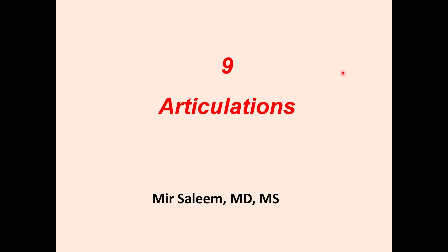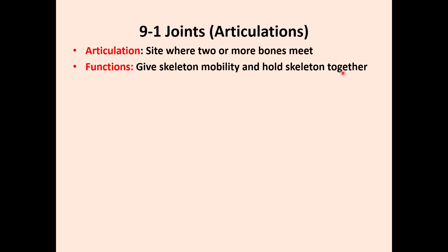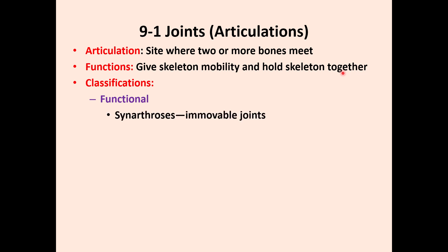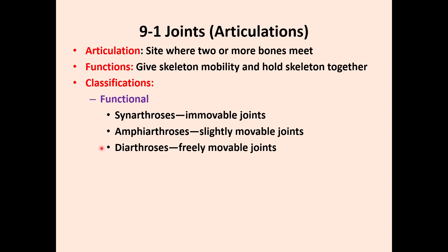Chapter 9 is about articulations or joints. Articulations are the connections between two bones — either for stabilization or mobility. Based on that, there are two different classifications. The first is based on function or mobility, which includes three types: synarthrosis (immobile), amphiarthrosis (slightly mobile), and diarthrosis (freely mobile). The second classification is based on structural or histological features.